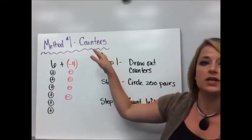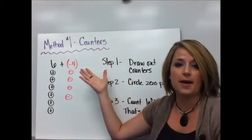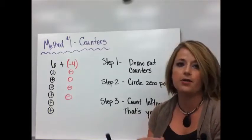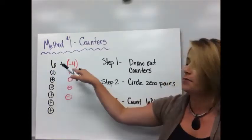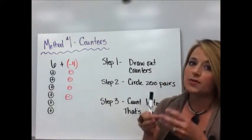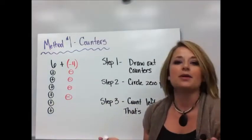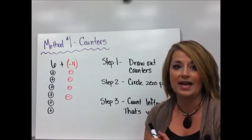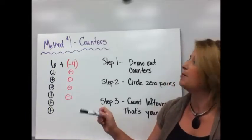The first method we're going to look at is using counters. You might have done this in the past, maybe in sixth grade, where you had physical black and red counters and you counted out the numbers that were part of the problem. You can do this with actual counters, but it's not really practical to have plastic pieces in your pocket at all times. So you can write these on your paper.